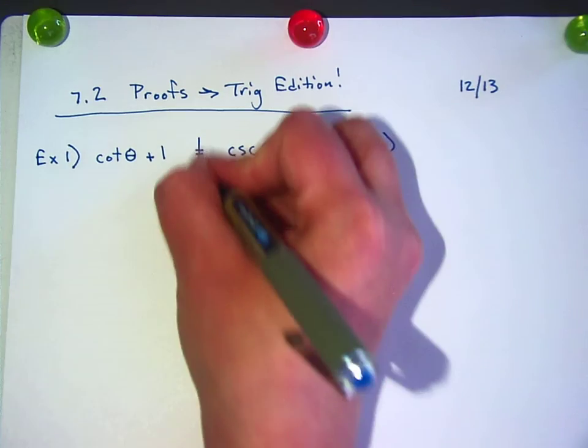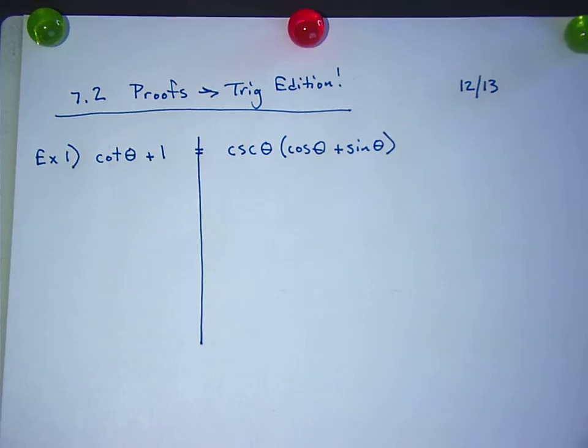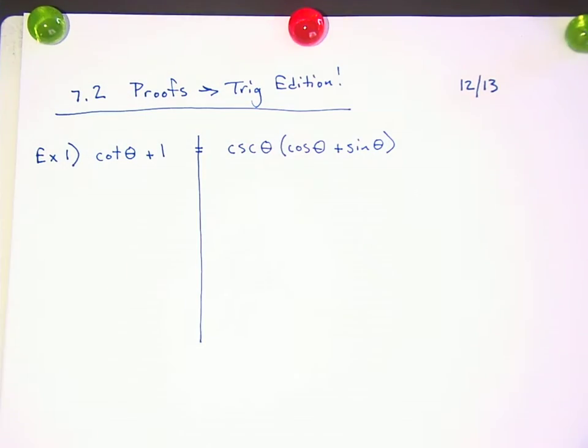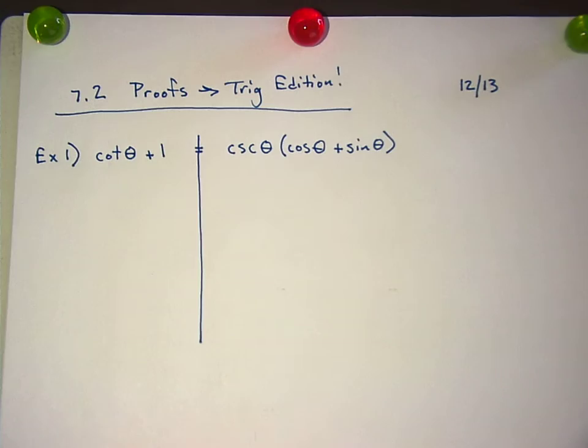When you're solving an equation, you're solving for a variable and you're moving things from side to side. You may not move things from side to side in the proof. Basically, we're going to work on the left side and work on the right side and try to make them equal to each other to prove that they're the same.